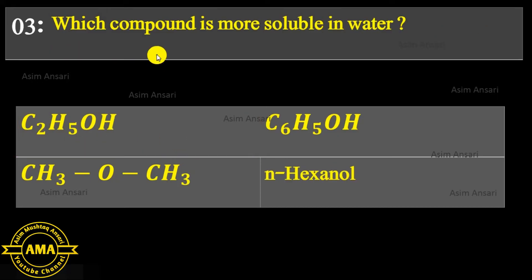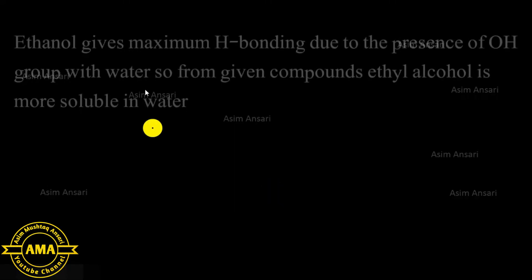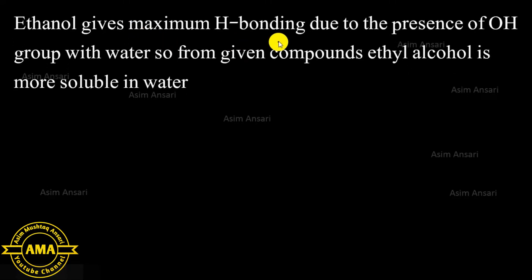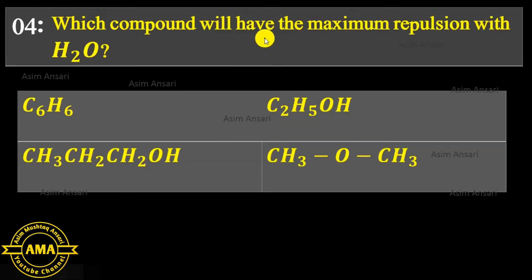Next MCQ: Which compound is more soluble in water? Options: C2H5OH, C6H5OH, CH3OCH3, or n-hexanol. Ethanol gives maximum hydrogen bonding due to the presence of a hydroxyl group with water, so from the given compounds ethyl alcohol is more soluble in water. The exact answer is ethyl alcohol.